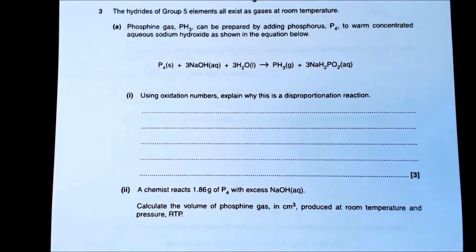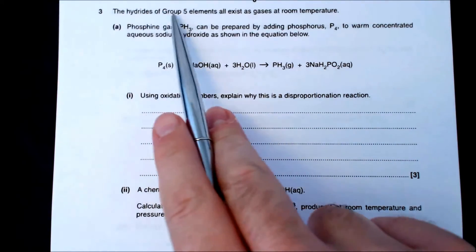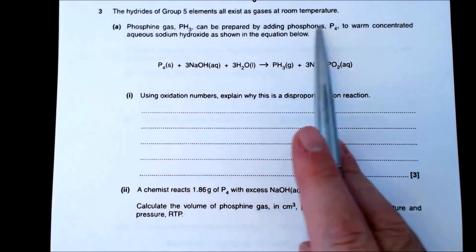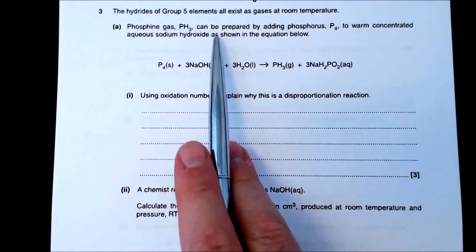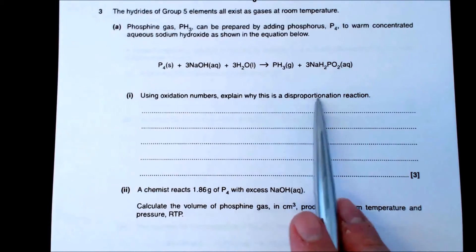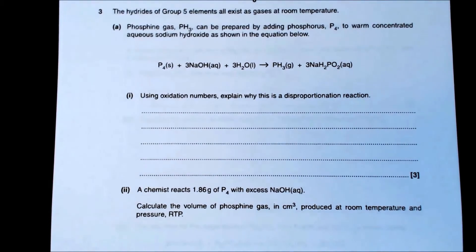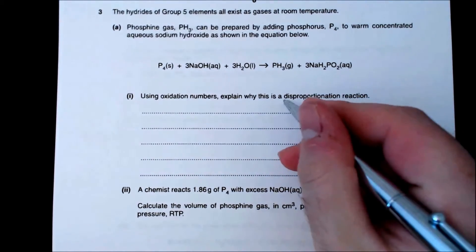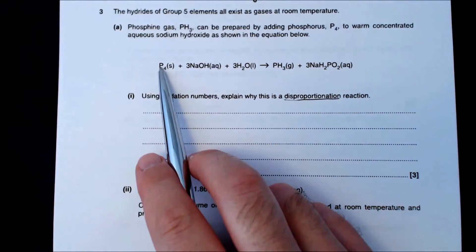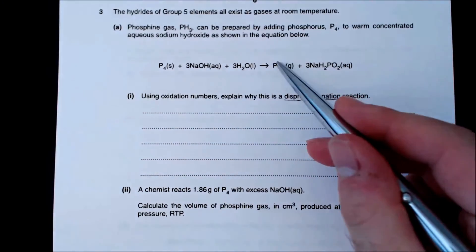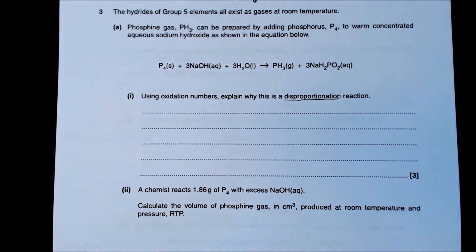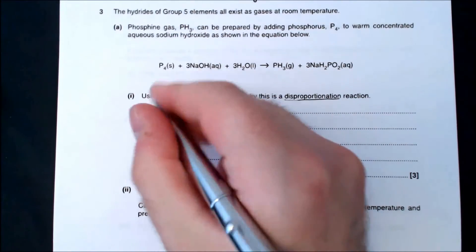Question three: P₄ reacts with warm concentrated NaOH. Using oxidation numbers, explain why this is a disproportionation reaction. A disproportionation reaction is one where an element is simultaneously oxidised and reduced. We have phosphorus in P₄, PH₃, and NaH₂PO₂ in the same equation — so we need to find the oxidation state of phosphorus in each.